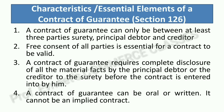Fourth: a Contract of Guarantee can be oral or written — it cannot be an implied contract. The guarantee must be expressed, either orally or in writing. Implied conduct cannot constitute a guarantee, because the guarantee is always given when the principal debtor requests someone to act as guarantor and then the guarantor gives the guarantee — it is not given on the guarantor's own initiative.